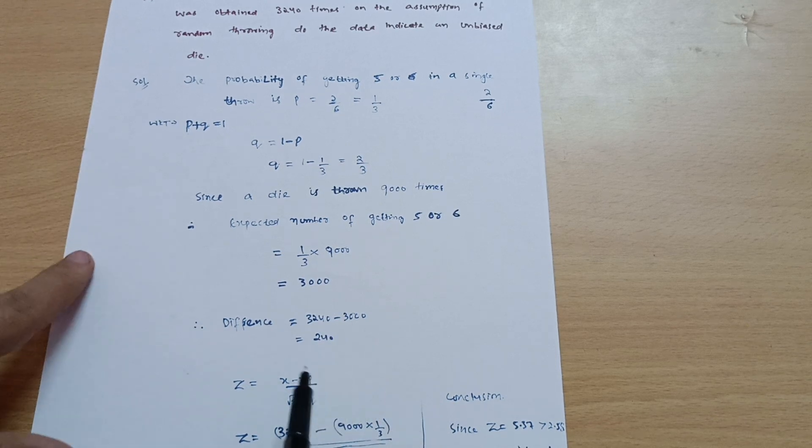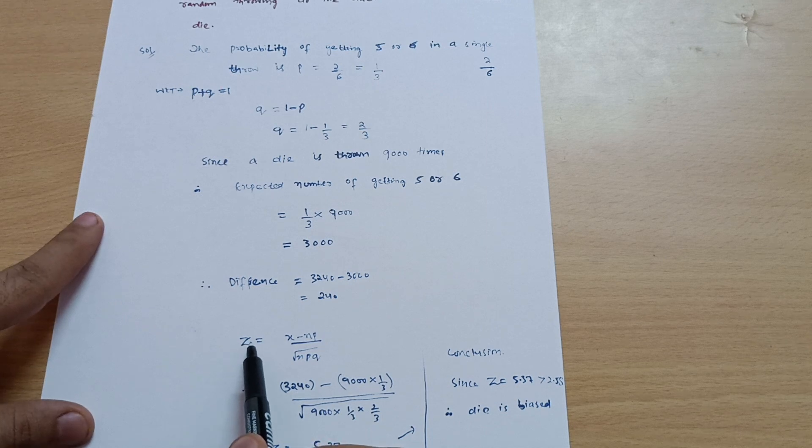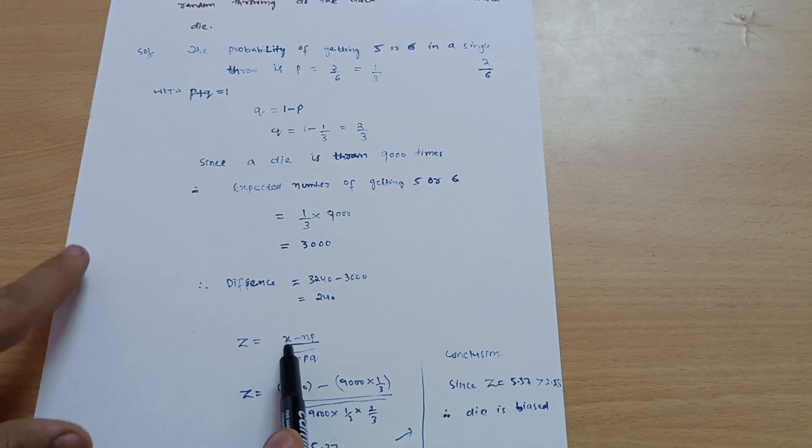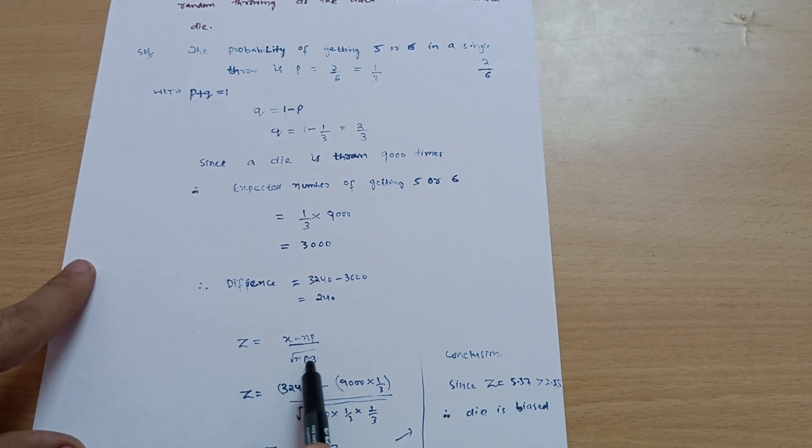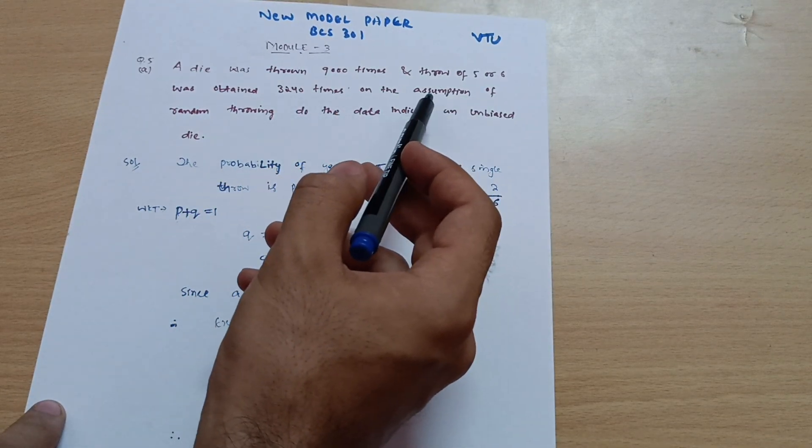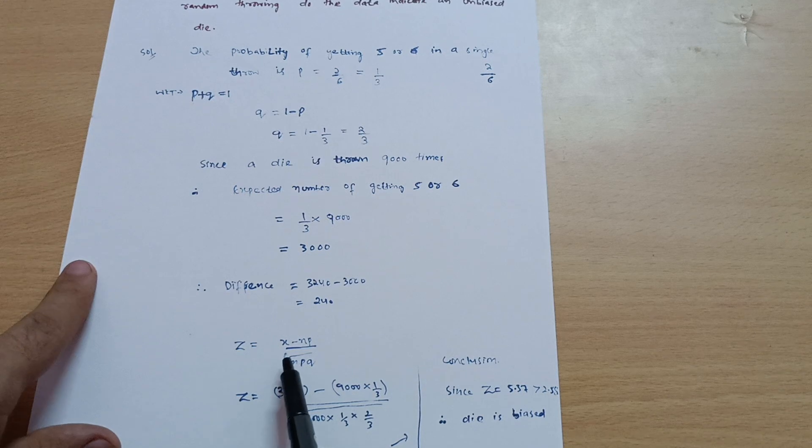This is the difference between the expected and the assumption value. The formula is, to check if it's unbiased or biased, z equals x minus np divided by root of npq, where x is the value 3240 based on the assumption.